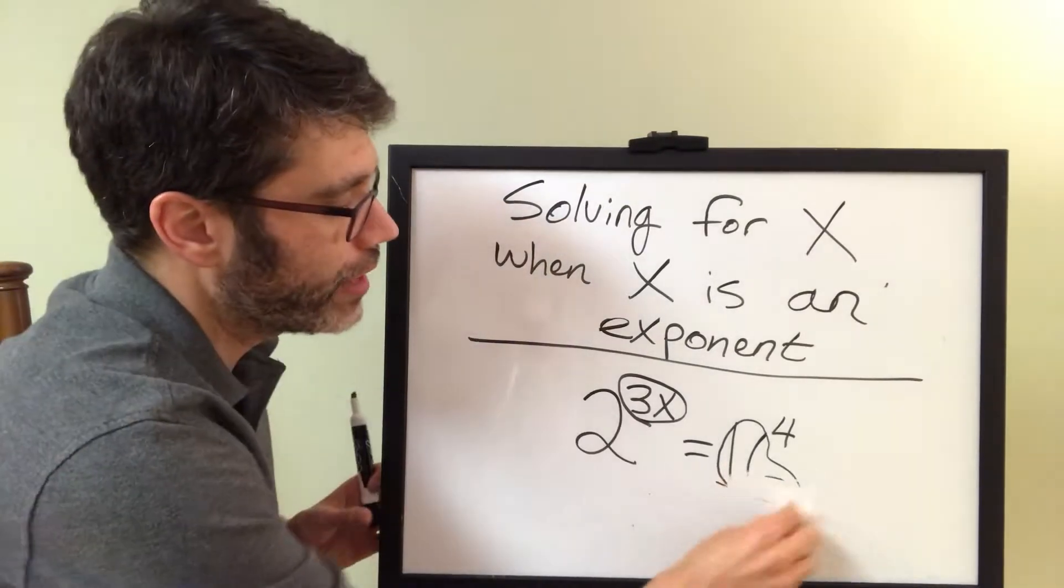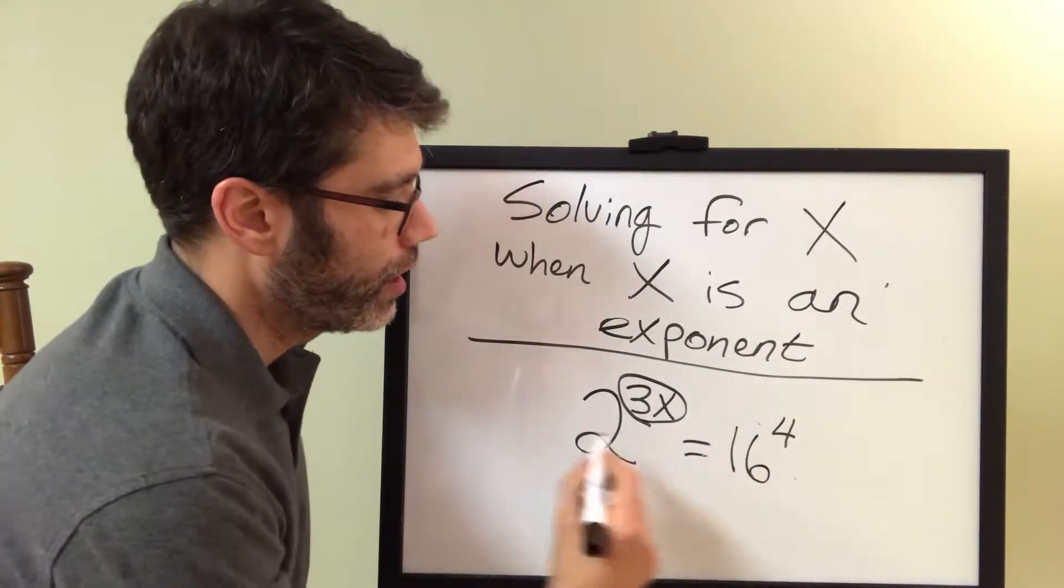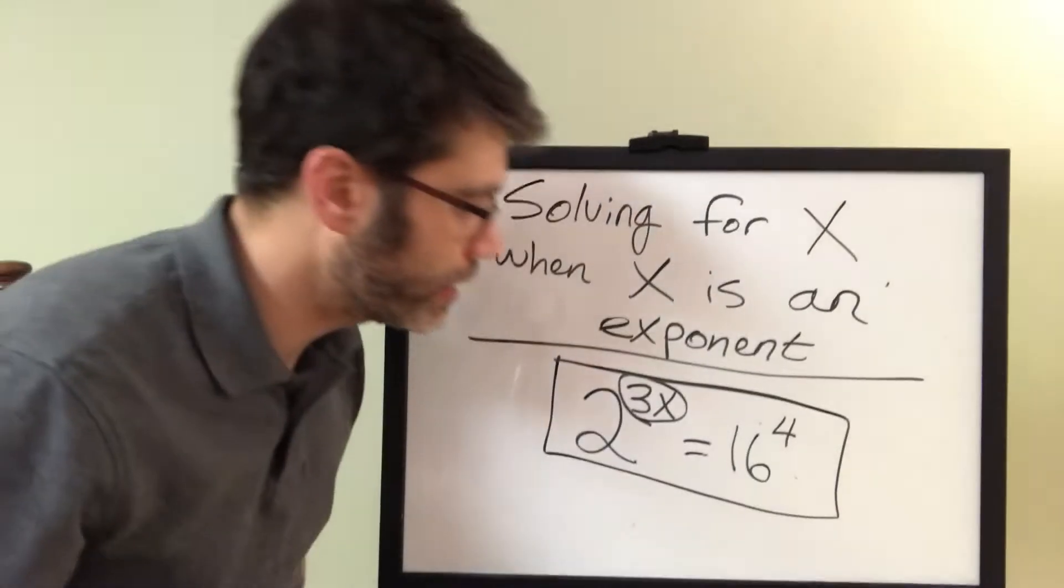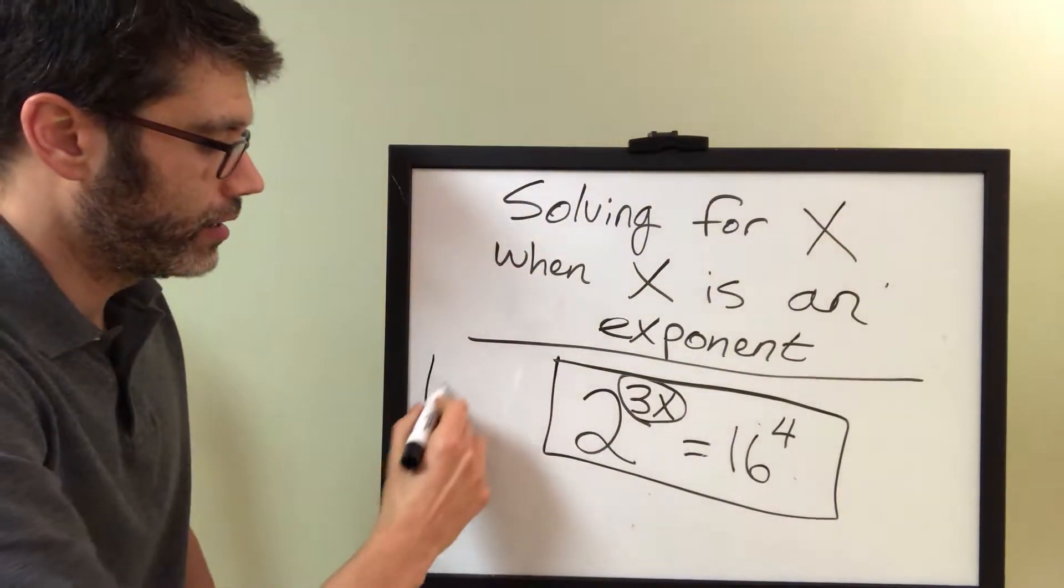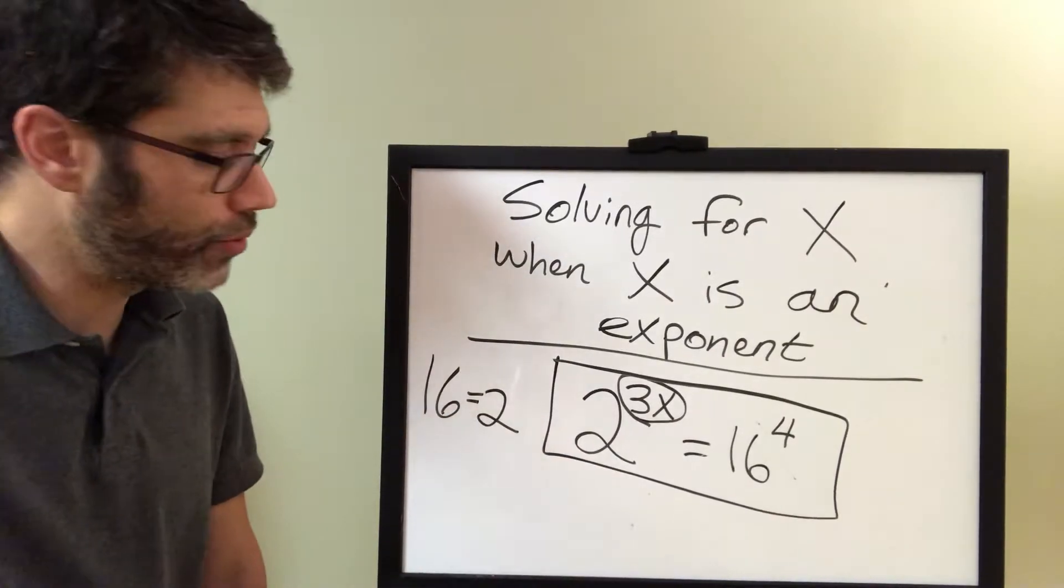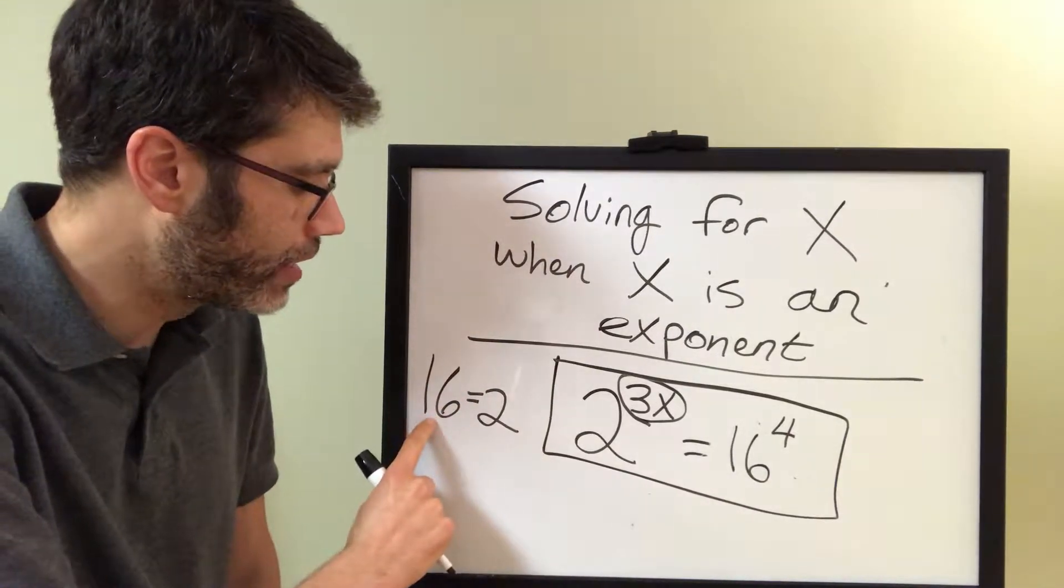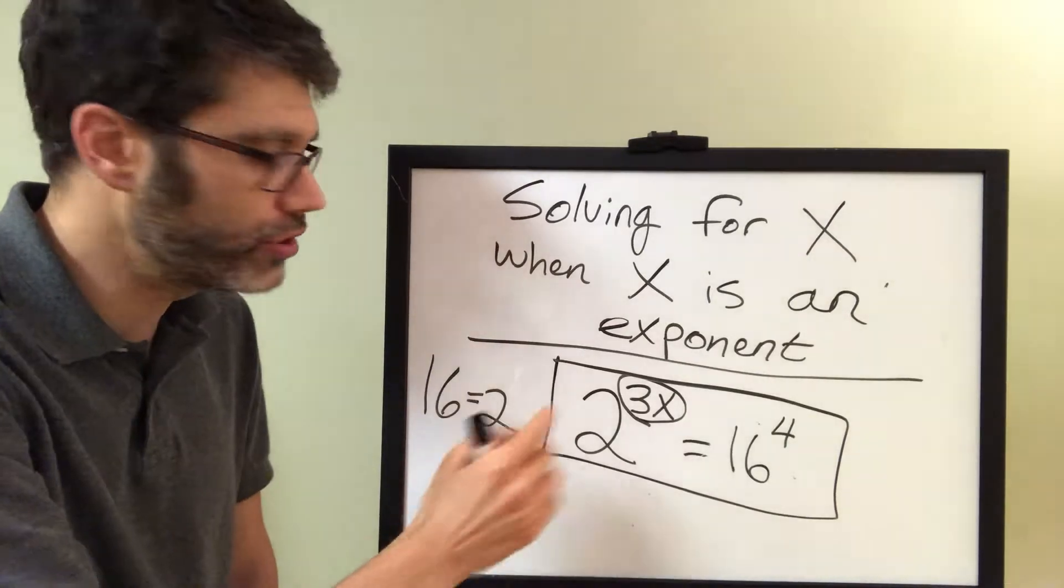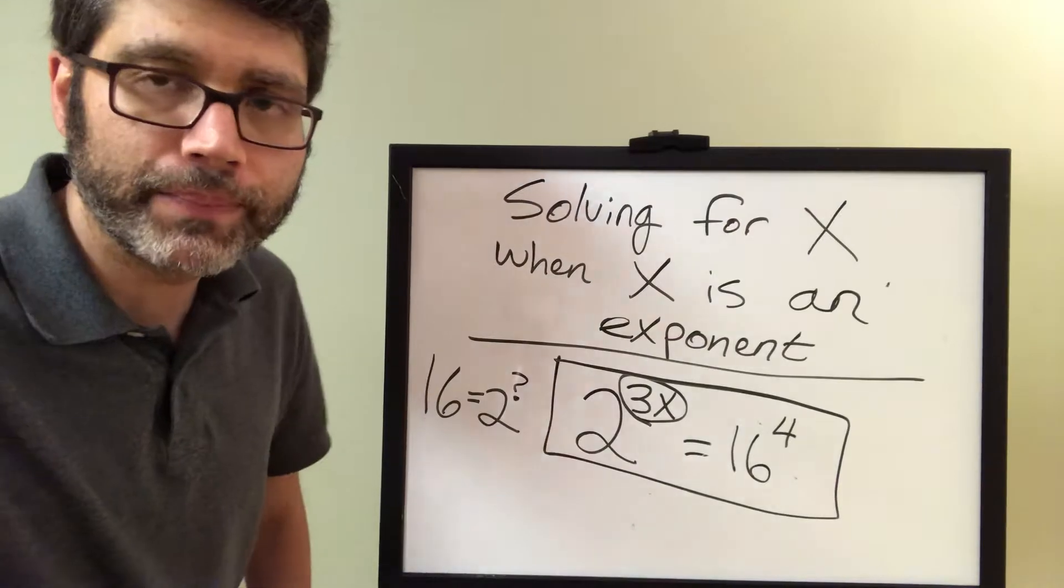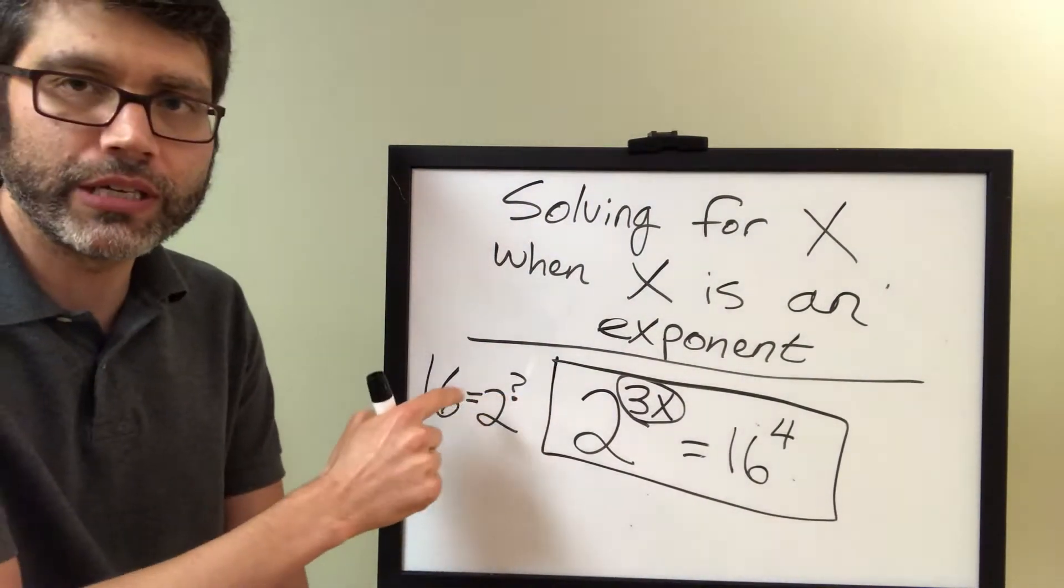So how would we do that? Let's set this aside just for a second. Let's just think about 16. Let's think about 16, and let's think about a base of 2. How would I express 16 with a base of a 2? I'm going to put a little question mark where the exponent is going to be. What would 2 need to be raised to to equal 16?